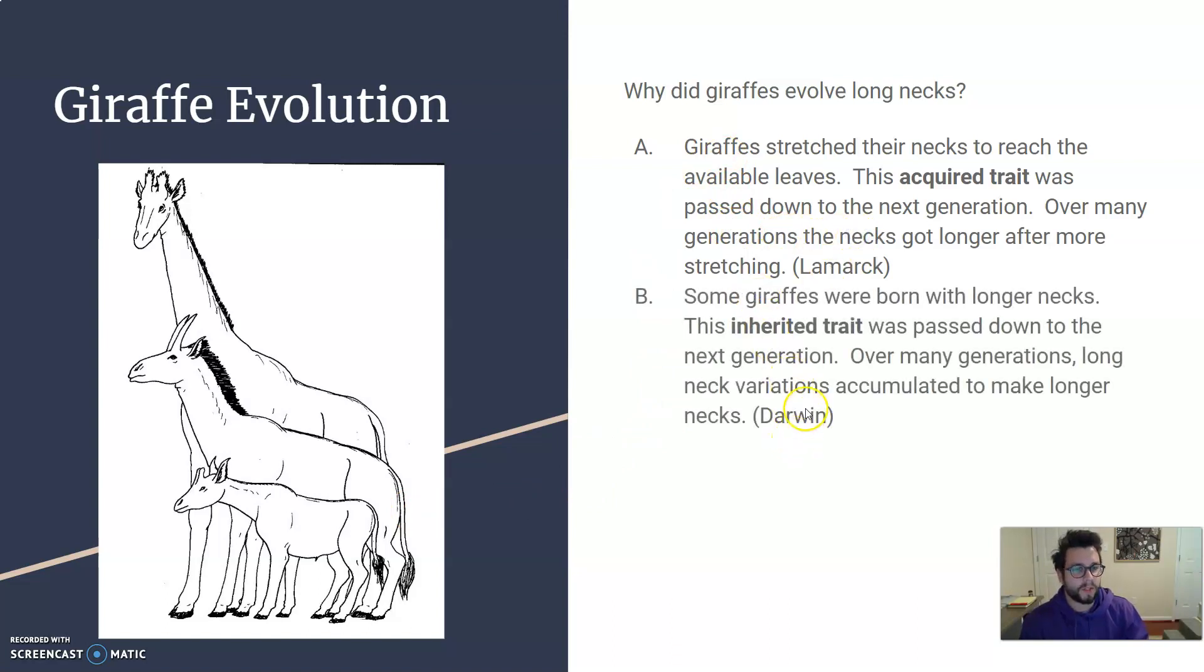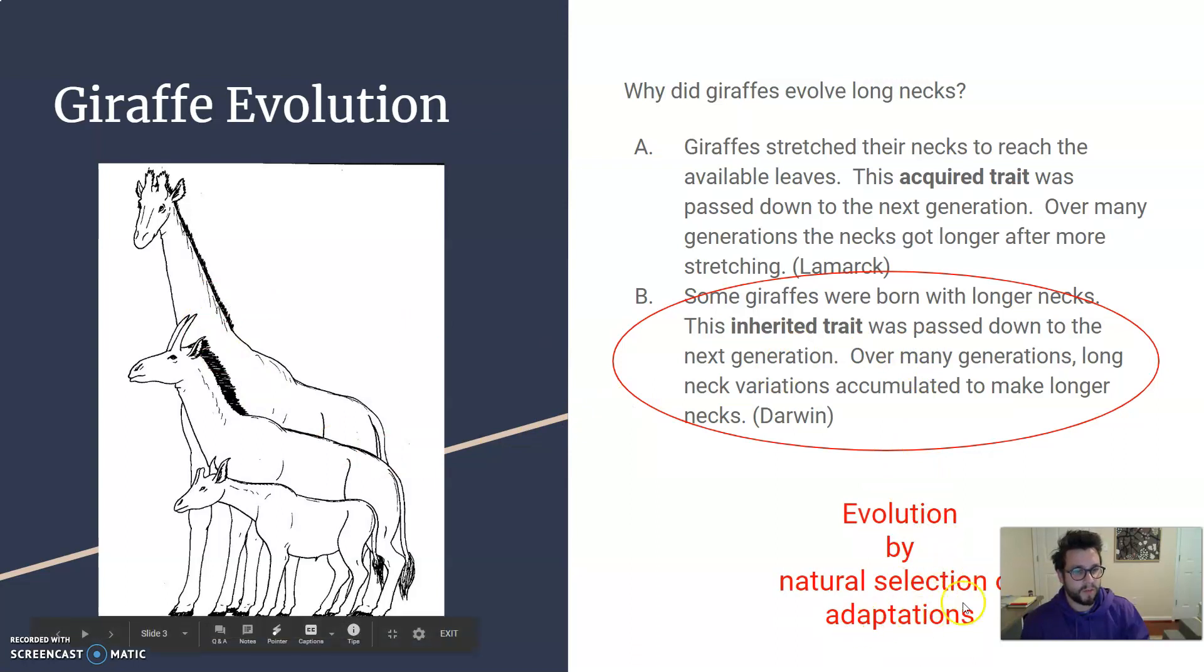The second proposition is more of the Darwinian following laws of natural selection. Some giraffes were born with longer necks, so they already had longer necks when they were born. Not as long as a giraffe today, but a slightly longer neck. And since they were born with it, they inherited it and they could pass it down to the next generation. So over many generations, more longer neck variations can accumulate to make the eventual longer necks. And that's what we're thinking happened more along the lines of today. So that would be evolution by natural selection of the adaptations available.